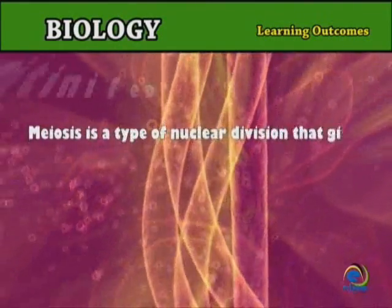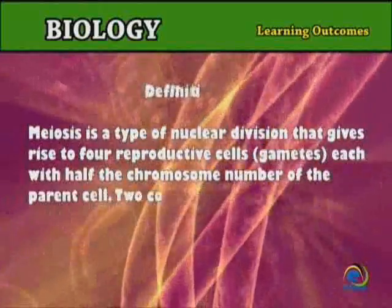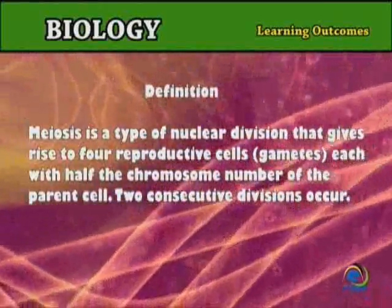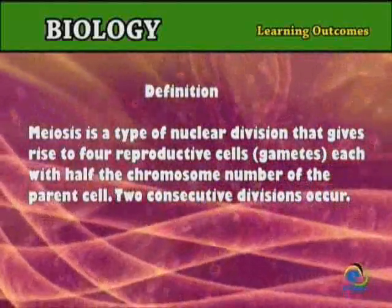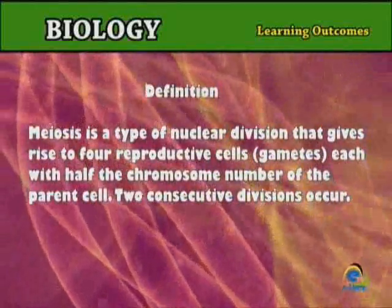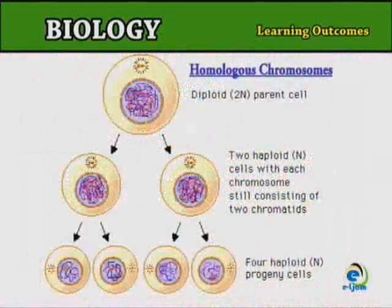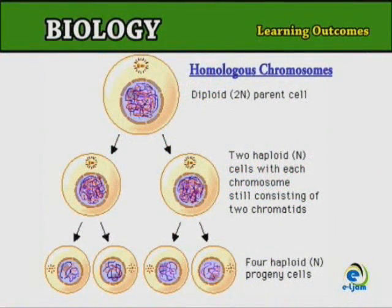Meiosis is a type of nuclear division that gives rise to four reproductive cells — gametes — each with half the chromosome number of the parent cell. Two consecutive divisions occur. In the first, homologous chromosomes become paired and may exchange genetic material before they move away from each other into separate daughter nuclei. This is the actual reduction division, because each of the two nuclei so formed contains only half of the original chromosomes. The daughter nuclei then divide by mitosis and four haploid cells are produced.